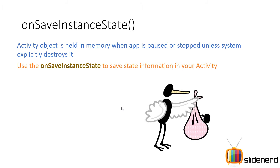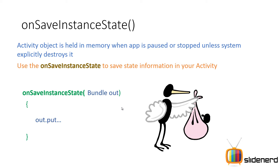So how do you actually save it? Your OnSaveInstanceState has a parameter called Bundle. The Android operating system gives you this Bundle variable, which is actually just a map. If you remember the map data structure in Java or C or C++, you give it a key and a value, and to get the information back you just give the key and it returns the value. You have methods like outState.putInt, putString, putChar, and so on. All you need to remember is outState.putSomething — those are the methods for saving information inside OnSaveInstanceState.